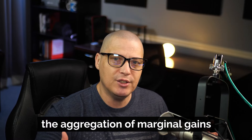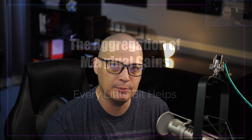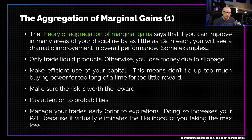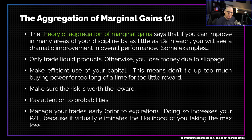We're going to talk about a theory called the theory of the aggregation of marginal gains. So let's talk about the aggregation of marginal gains — I subtitled this 'every little bit helps.' Basically, what the aggregation of marginal gains states is that if you can improve in many areas of your discipline by as little as 1% in each area, you will see a dramatic improvement in your overall performance.